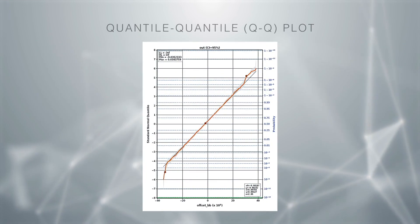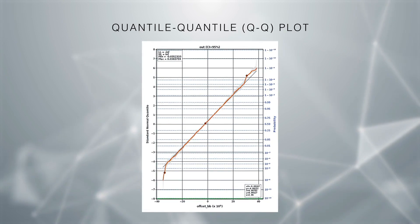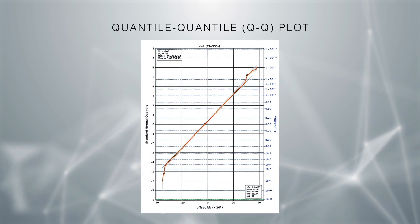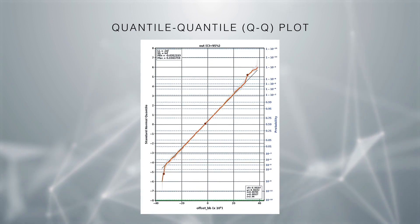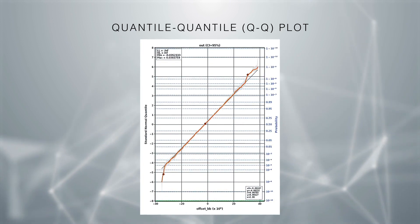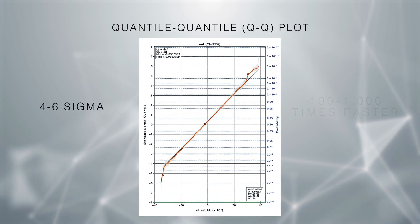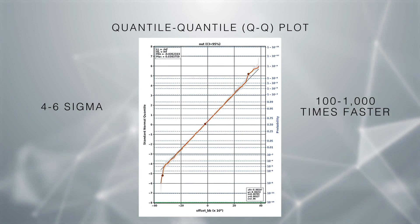Traditional Monte Carlo methods require billions of samples for high-sigma analysis. PrimeSim Advanced Variation Analysis uses advanced machine learning algorithms to accurately predict non-normal circuit behavior across four to six sigma with a hundred to a thousand times faster throughput.